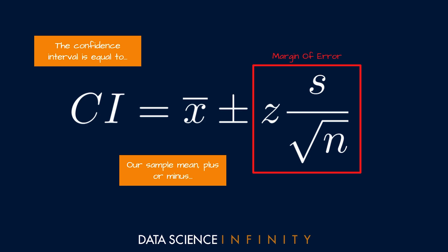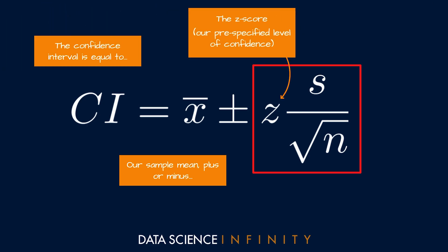The margin of error itself is made up of two parts. Firstly z which is referring to the z-score or in simpler terms this is just the pre-specified level of confidence that we want. So do we want to be 95% confident that the mean falls within our interval or only 90% or do we want to be 99.99% confident? We have full control over this particular metric and we choose it ahead of time. When we put all of this into practice in a minute you will see exactly what I mean.